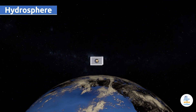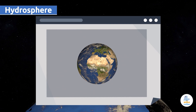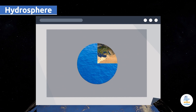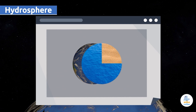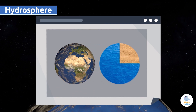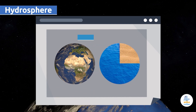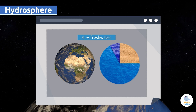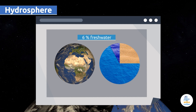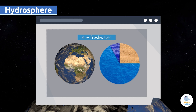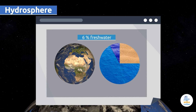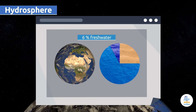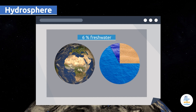The hydrosphere covers three-quarters of our planet. That's a huge amount of water, but only 6% is fresh drinking water. That's why we should save as much water as we can and use it wisely.